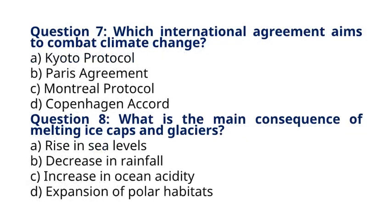Question 7: Which international agreement aims to combat climate change? A. Kyoto Protocol. B. Paris Agreement. C. Montreal Protocol. D. Copenhagen Accord. The correct answer to question 7 is option B: Paris Agreement. Explanation: The Paris Agreement is an international treaty that aims to limit global warming and mitigate climate change.